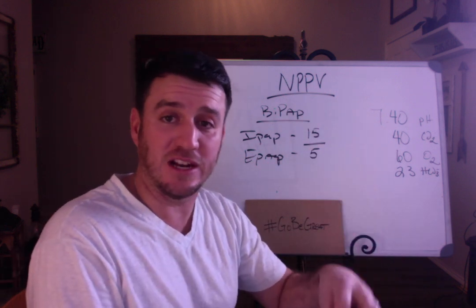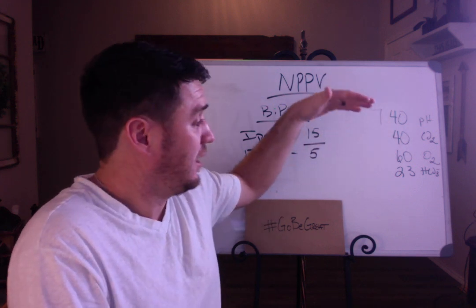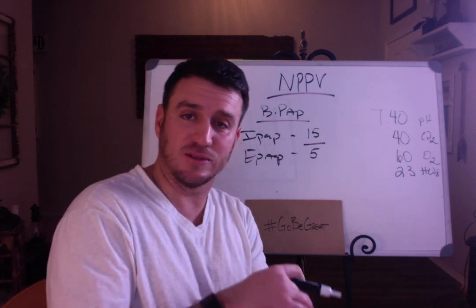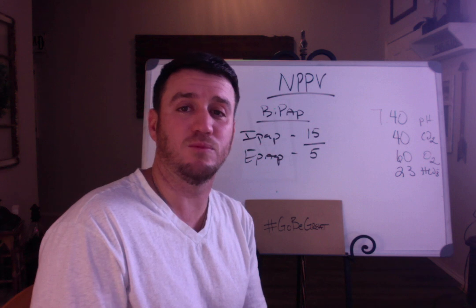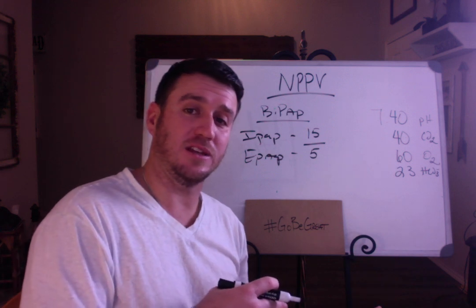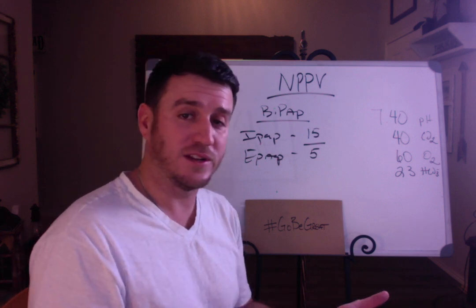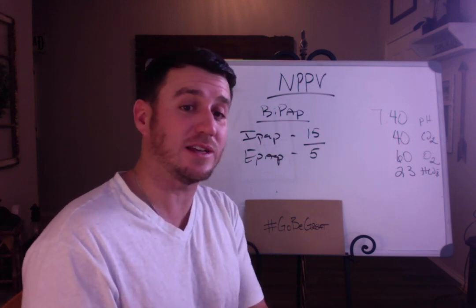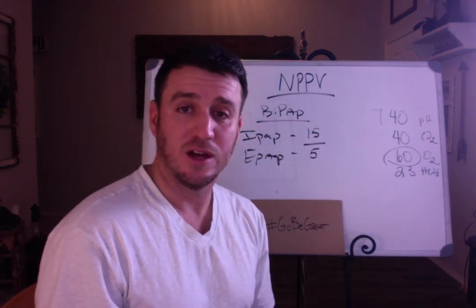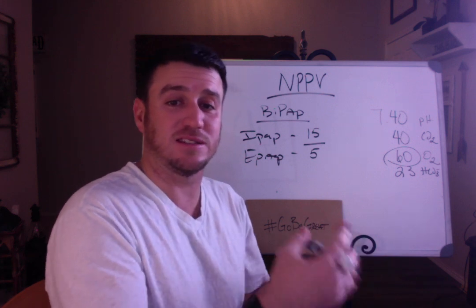Look at that blood gas and tell me what the problem is. You obviously do not have a ventilation problem because your pH is normal, your CO2 is normal, and your bicarb is normal. A ventilation problem would present with an increase in CO2 and a decrease in pH — but that's not what we have here. We just have normal pH, normal CO2, no ventilation problem. What we need to address is the oxygenation problem. We have a patient who is mildly to moderately hypoxemic, and we need to make a change on our BiPAP to fix this.